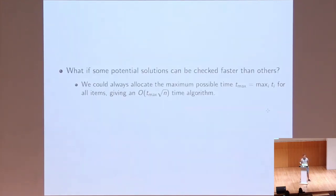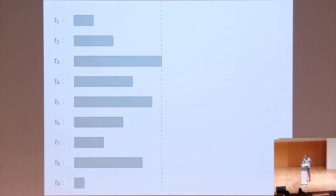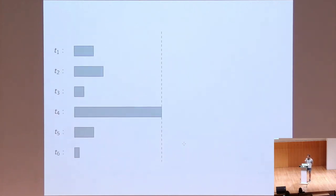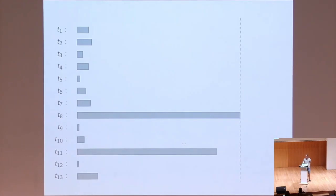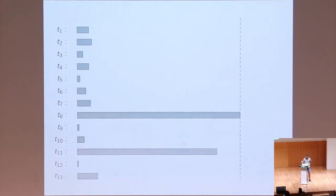How does that affect search complexity? We could always pretend that all items are equally costly and simply allocate the same time for each of them, the maximal among all of them. But that really means we pretend all items cost this much, and then we recover Grover's kind of search. But it's probably not a very efficient idea.